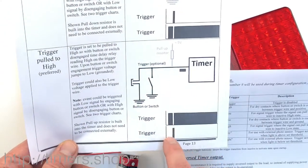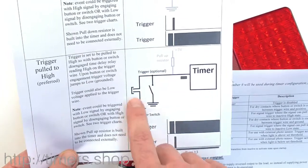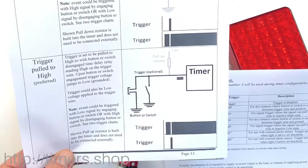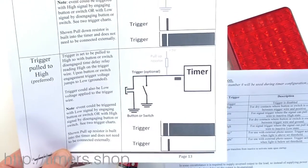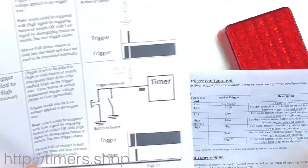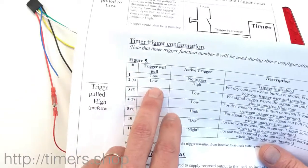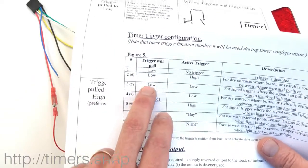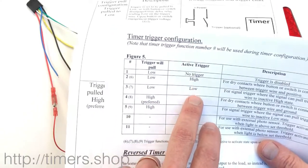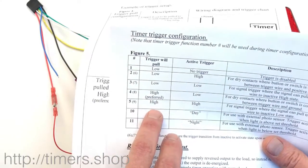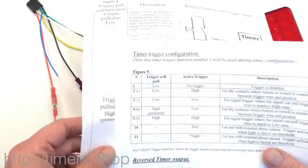You can also reverse it and make the trigger active when you disconnect the button versus when you connect it. So those are the four different configurations: you can set the pull to low and the active trigger can be high or low. And for trigger 4 and 5, the pull is high and the trigger can be either low or high.